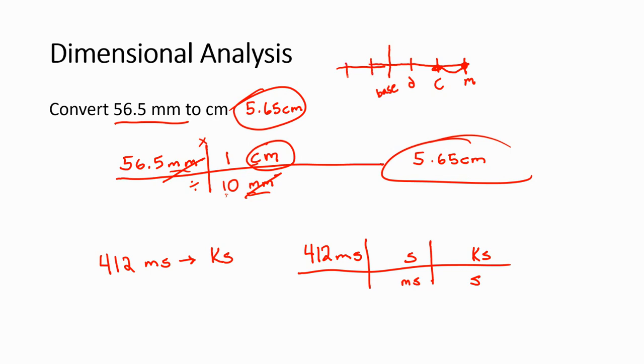Okay. So on my Greek prefix chart, kilo is way out here. And here's my base. And here is milli. So the first thing I'm going to do is look at what's the relationship between milli and the base. They are three decimal places apart. That's 10 to the third, or 1,000. And I always, like I said before, keep my larger number with the smaller unit.